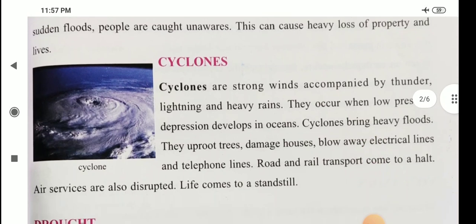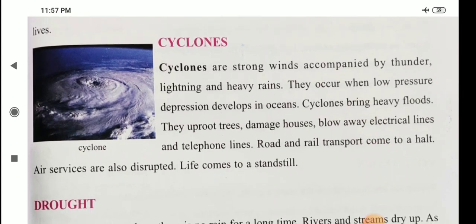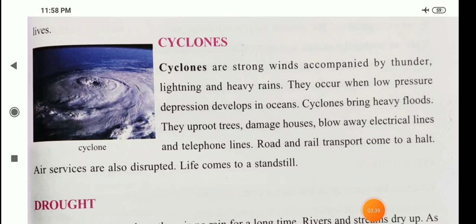Cyclones are strong winds accompanied by thunder, lightning, and heavy rains. They occur when low pressure depression develops in oceans. Cyclones bring heavy floods. They uproot trees, damage houses, and blow away electrical lines and telephone lines. Road and rail transport comes to a halt. Air services are also disrupted. Life comes to a standstill.